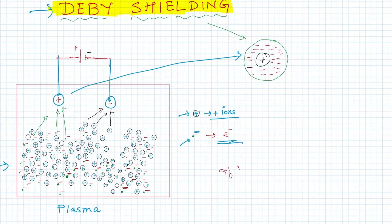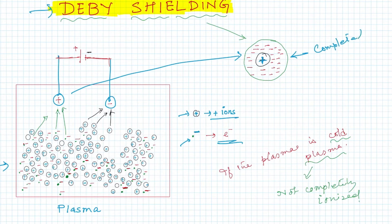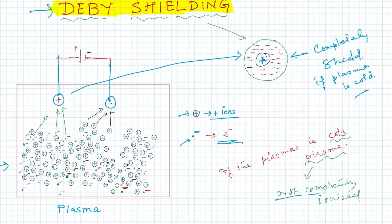This sphere will be completely sealed if the plasma is cold plasma. What do we mean by cold plasma? Cold plasma means which is not completely ionized. In such cases, this positively charged ball will be completely sealed — completely sealed if the plasma is cold. That means not completely ionized, so there must be some neutral particles also.